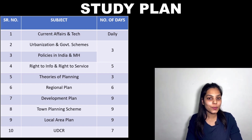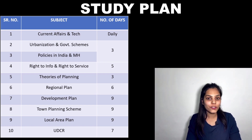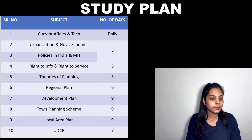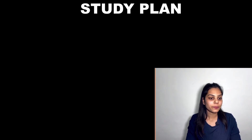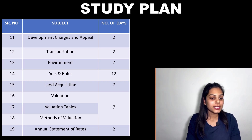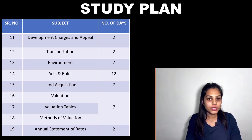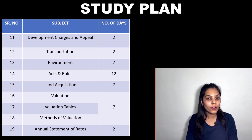Theories of planning is a theoretical subject — we will tell you from where to study it in the next slide. Three days are enough for theories of planning. The next is regional plan, which is very important, so six days are provided. The next is development plan, town planning scheme, and local area plan — nine days each are given for these subjects. The next is UDCR, for which seven days are given. Development charges and appeal requires two days. Transportation, which you have studied earlier, is easy — two days are enough.